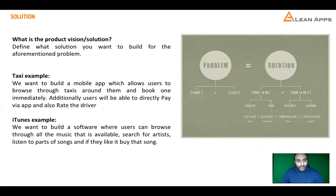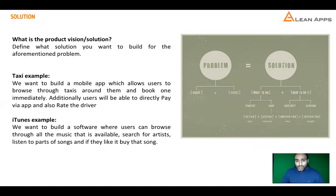Taking the iTunes example, we want to build a software where users can browse through all available music, search for artists, listen to parts of songs, and if they like it, buy that song. It basically gives an option to discover new music and new artists, listen to parts of that music, and then buy only that song — not the complete album. These are the three things you need to do for each idea, and then we'll go to the next step.